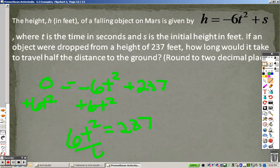I would divide both sides by 6 to get t by itself. So we get t² equals 237 divided by 6, which is 39.5. And then I would square root 39.5, and I end up getting plus or minus 6.28 seconds as my answer.